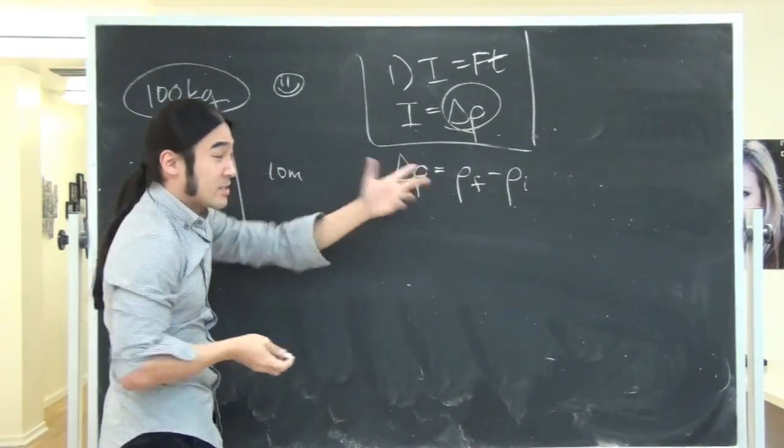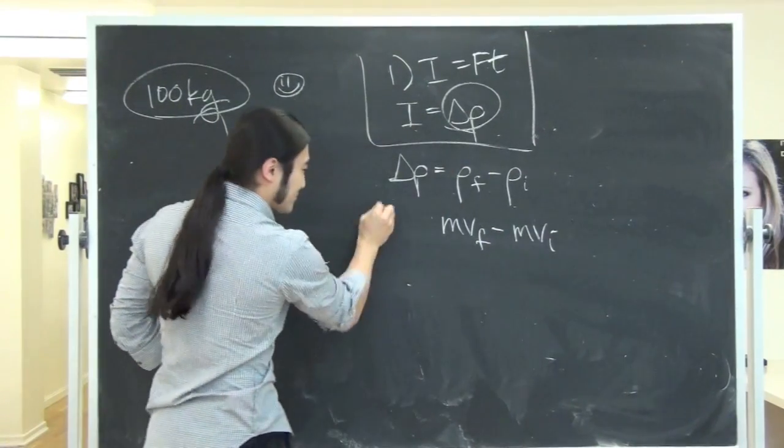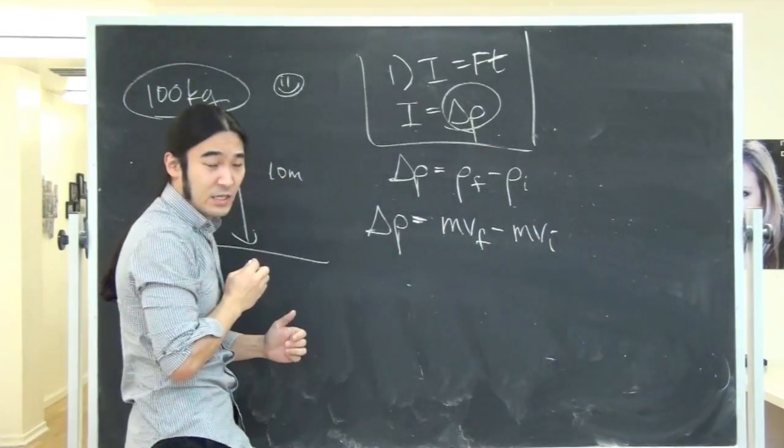Change in momentum is momentum final minus momentum initial. Remember also momentum was mass times velocity final minus mass times velocity initial. So I'm looking for something like this.